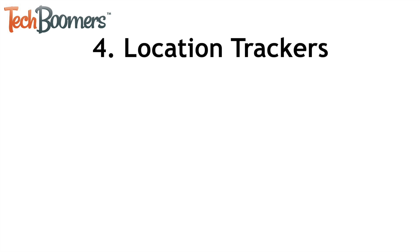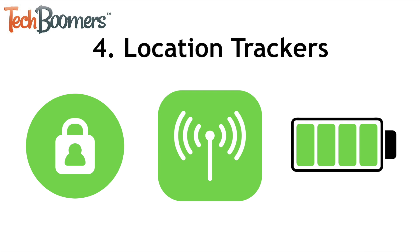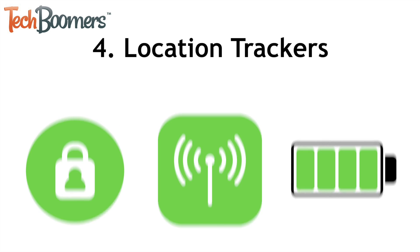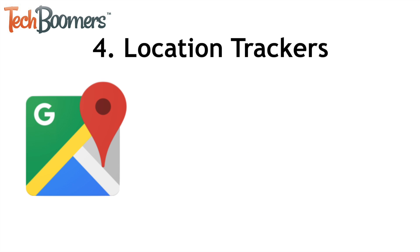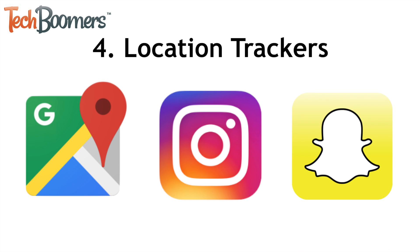The fourth category of apps you should get rid of are apps that track your location. For privacy and safety reasons, as well as to conserve your mobile data and battery life, you should delete any apps that use your device's location. Navigation apps like Google Maps and social media apps like Instagram and Snapchat may be using your location. If you want to keep one of these apps but stop it from accessing your location, you can turn off Location Access in your Android settings.